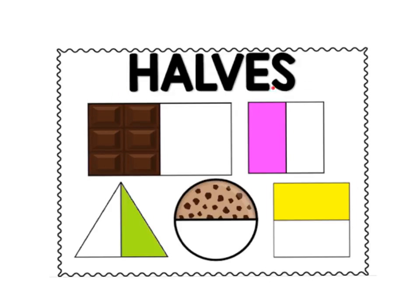Here is a square. It has been divided into two parts. Each part is the same size. This is one half of the square. Here is a triangle. It has been cut into two pieces. Each piece is the same size. This is one half.